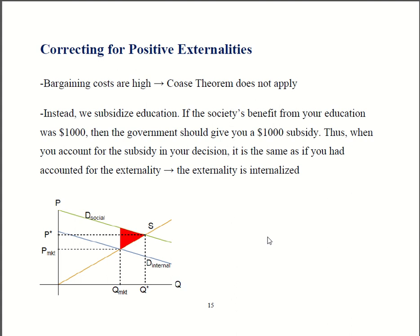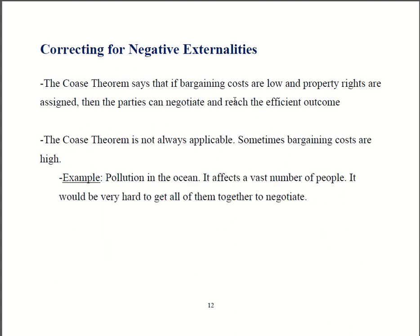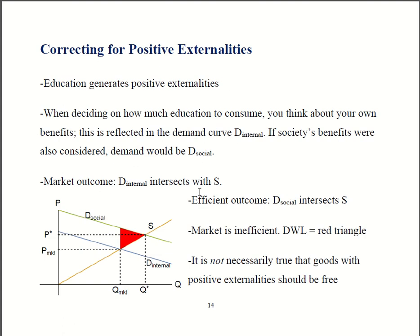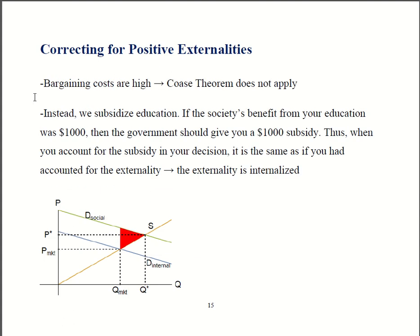So we said that one way to deal with externalities was with the Coase theorem. If you have low bargaining costs and you have property rights, then people can negotiate, and those negotiations will result in efficiency. The problem, though, is that sometimes bargaining costs aren't low. We talked about pollution in the ocean — it affects so many people, you can't get them all together to bargain over pollution. Likewise with education, that affects all of society. You can't get all of America together in one room to talk about what's the right approach to education. That means you can't use the Coase theorem because bargaining costs are too high.